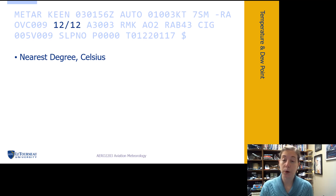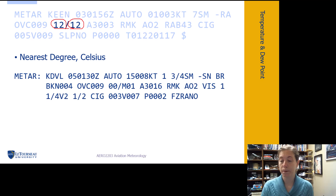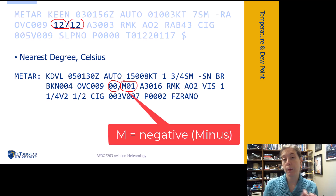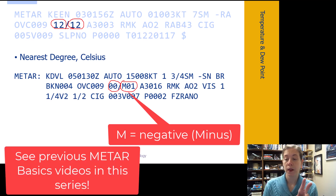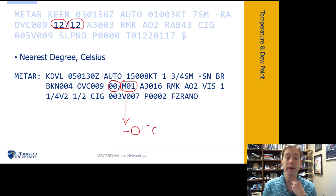The next group is the temperature group, which is a pretty straightforward and easy group to understand. We have the temperature given to the nearest degree Celsius, then the dew point to the nearest degree Celsius. Here's an example: an airport reporting a temperature of zero degrees and a dew point of M01. Thinking back to when we talked about visibilities and RVR, M again means minus — so the dew point here is negative one degree Celsius.